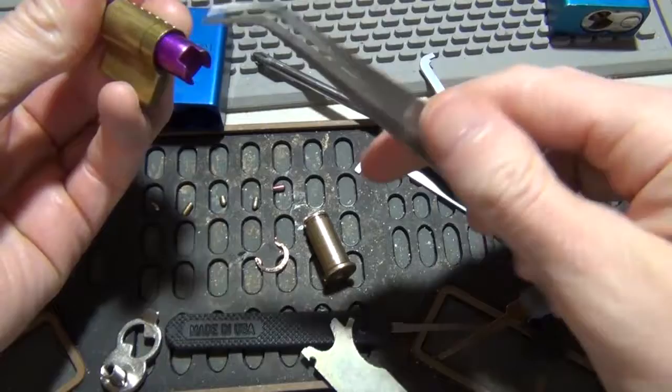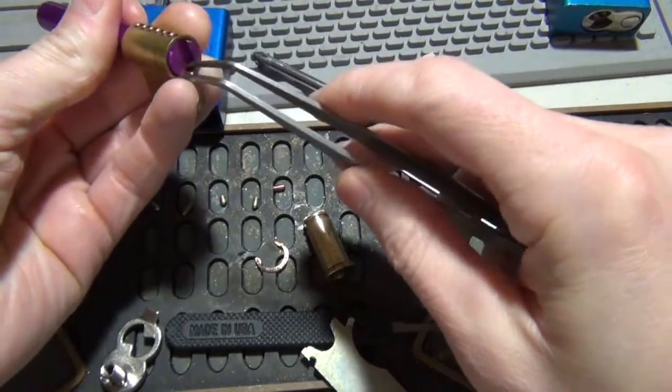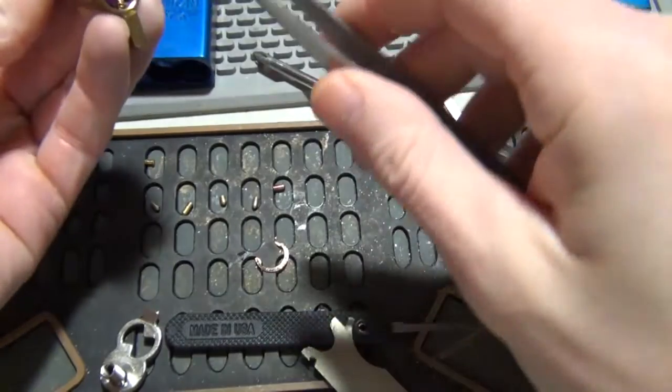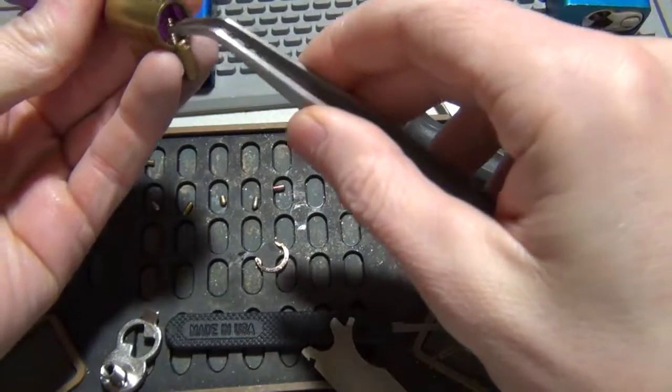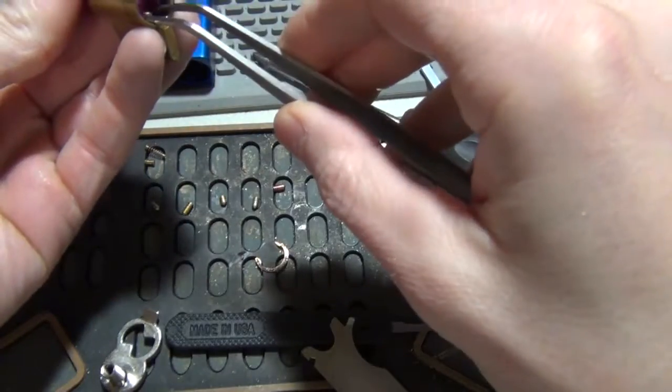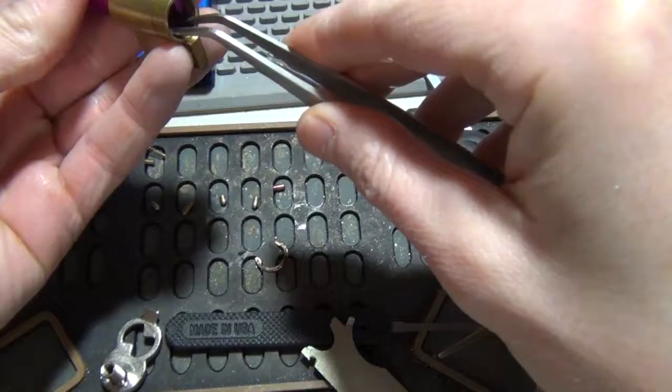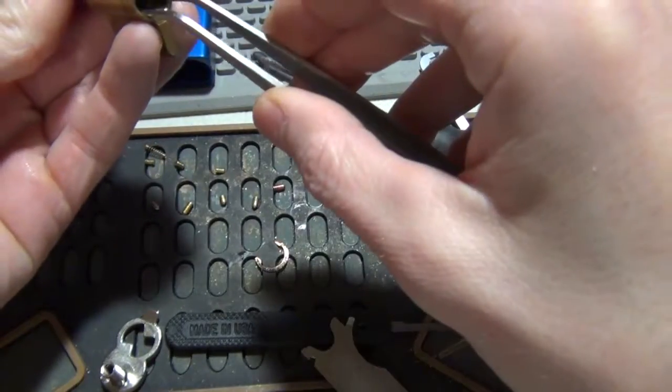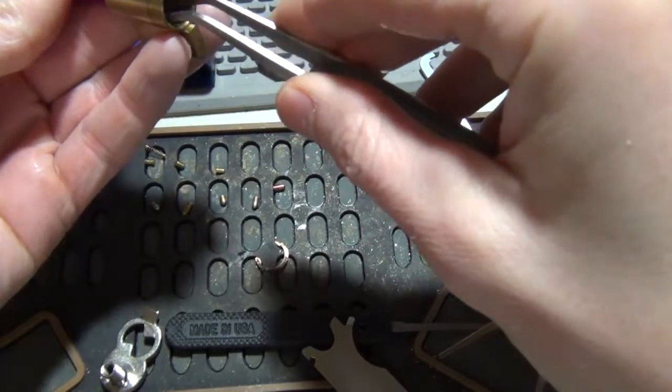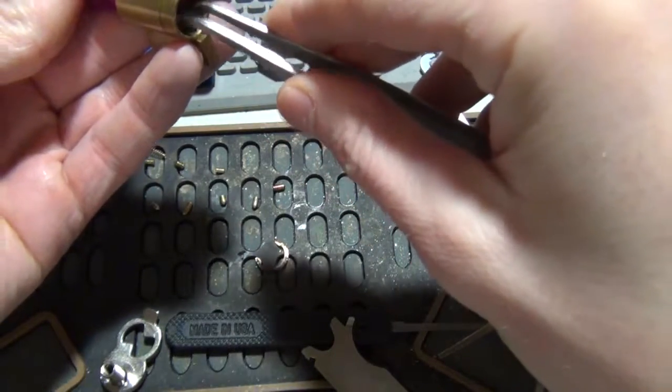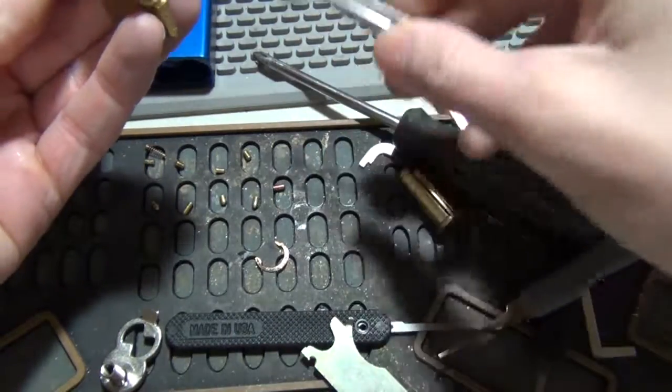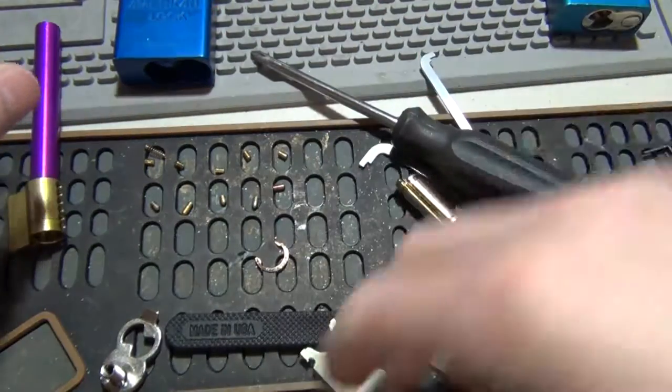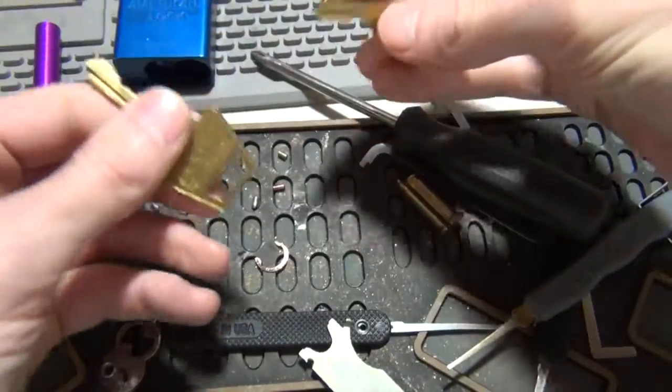Let's see what's going on upstairs here. One is going to be a spool, sure enough. Two serrated, three serrated, four serrated and five serrated. So we got one spool, rest serrated, and we got two keys left here.